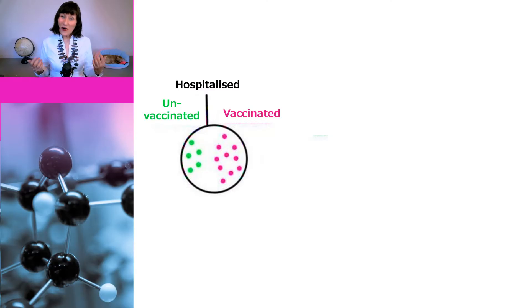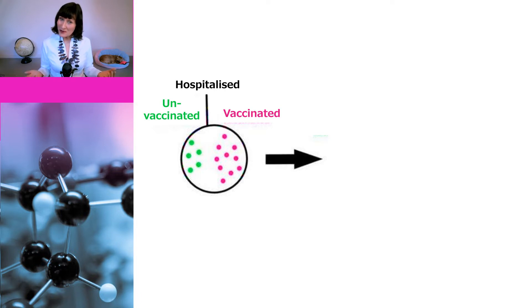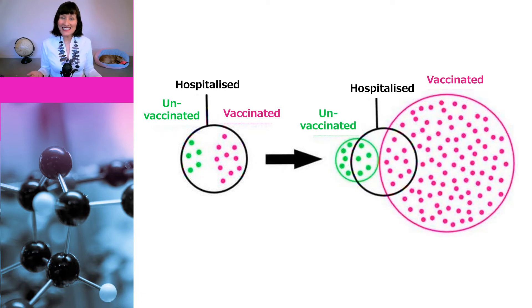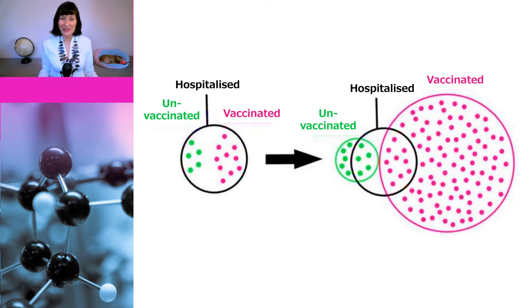Or if you prefer to look at this in graphical form, we can see here that it appears there are more vaccinated people being hospitalised than unvaccinated people. But if we look at all the data, we can clearly see that there are many more vaccinated people than unvaccinated people, so when we look at it as a proportion, a much lower proportion of vaccinated people are being hospitalised than unvaccinated people.